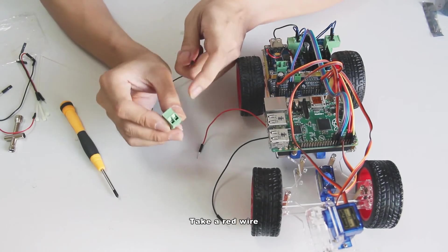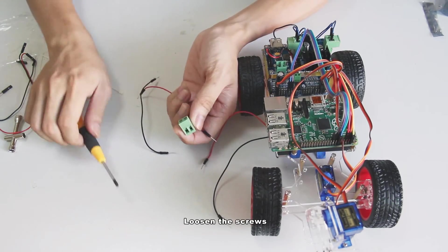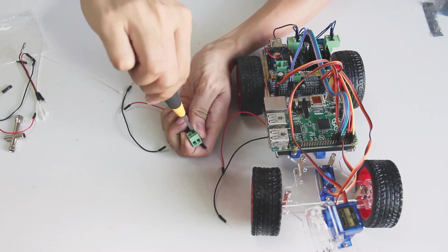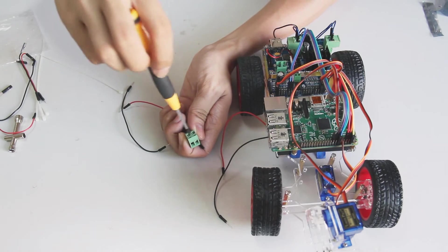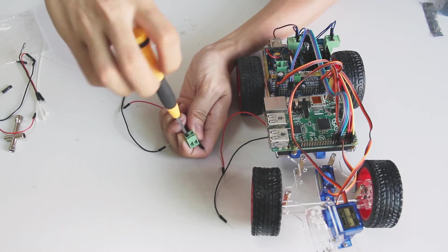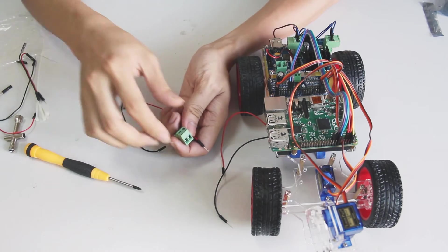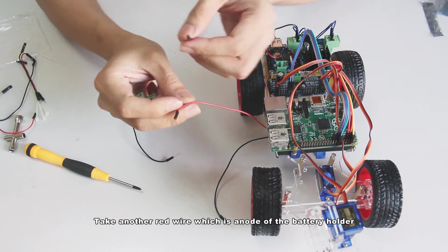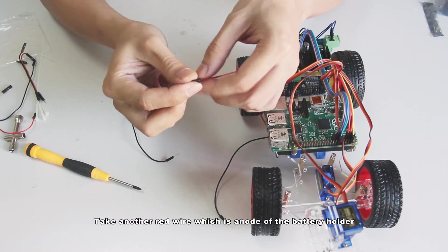Next you will connect the battery holder, step down converter and motor driver. Take a red wire. Loosen the screws. Take another red wire which is the anode of the battery holder.